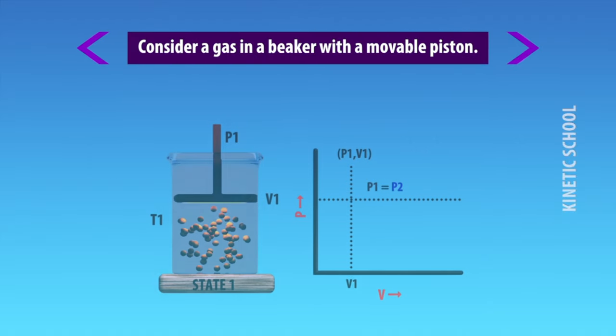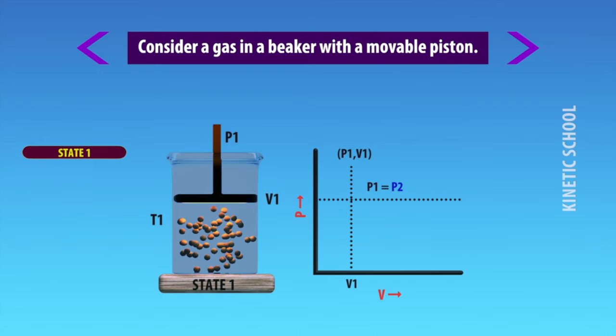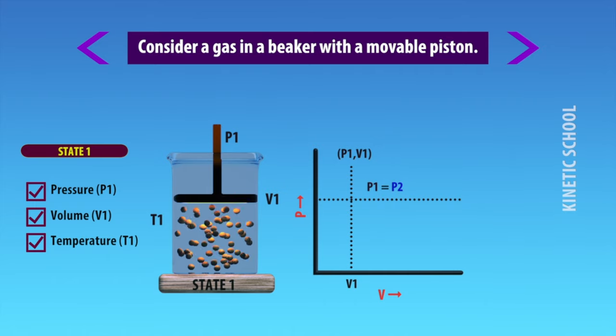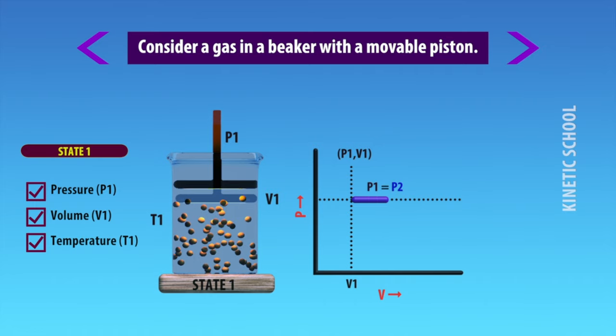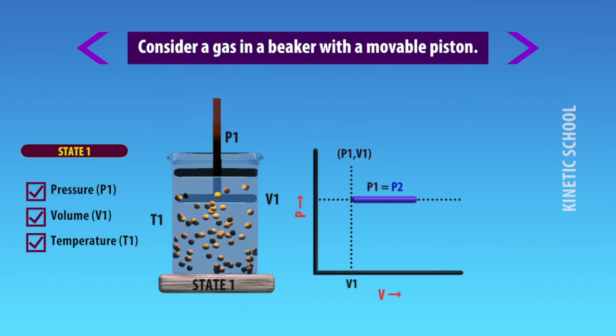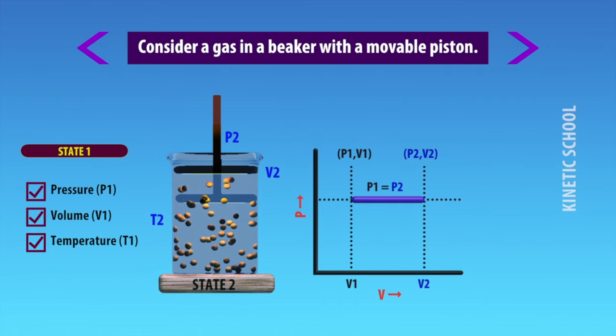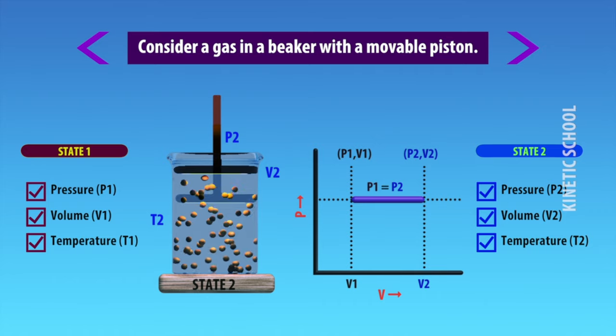Consider a gas in a beaker with a movable piston. This is represented by state 1 and has a fixed value of pressure P1, volume V1, temperature T1, etc. The gas can be cooled or heated either at constant pressure, constant temperature, or constant volume. Then the gas changes to another condition, represented by state 2.